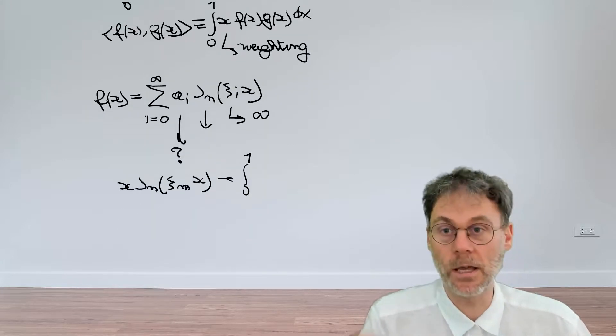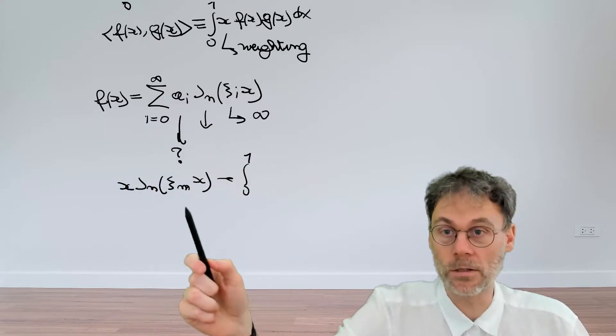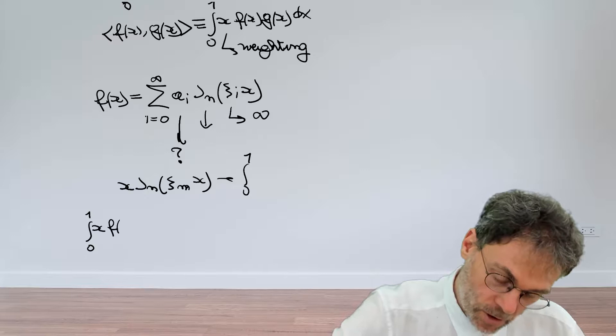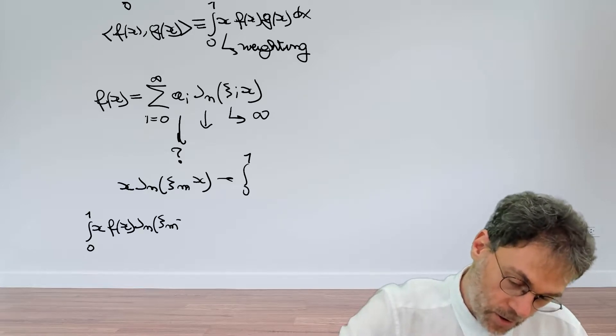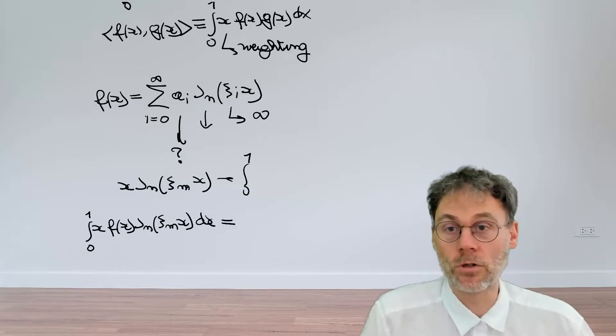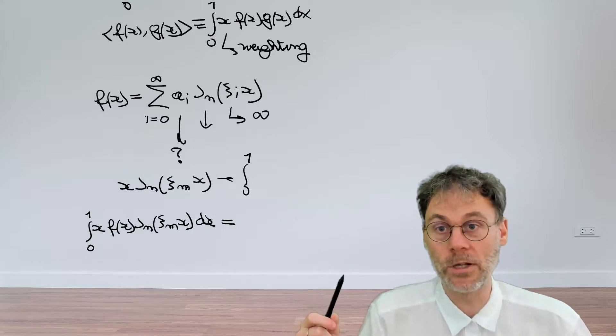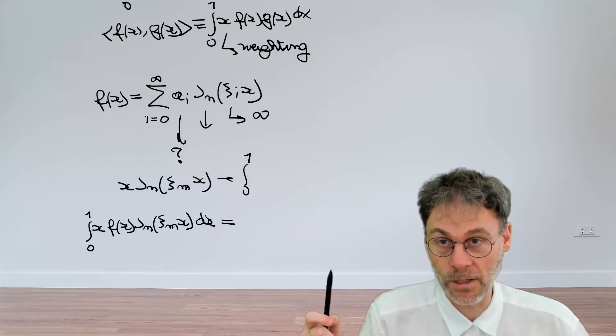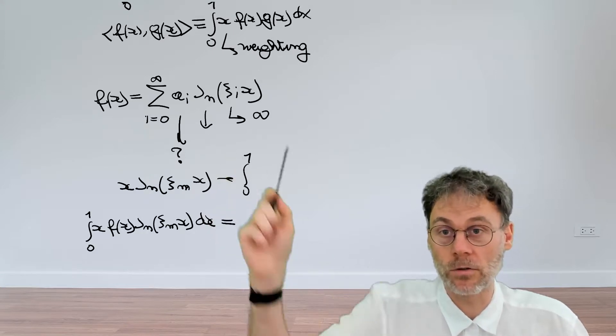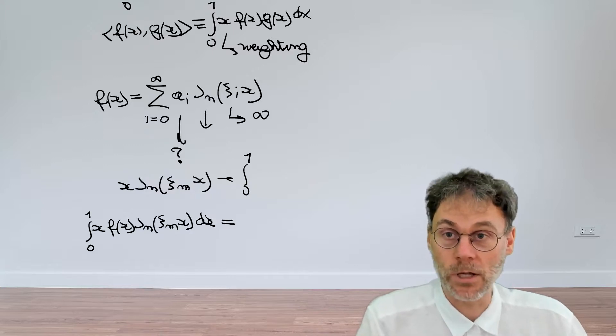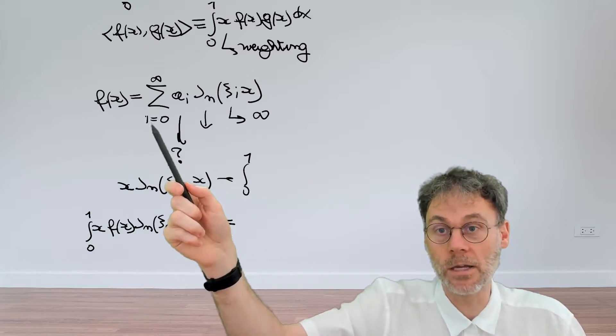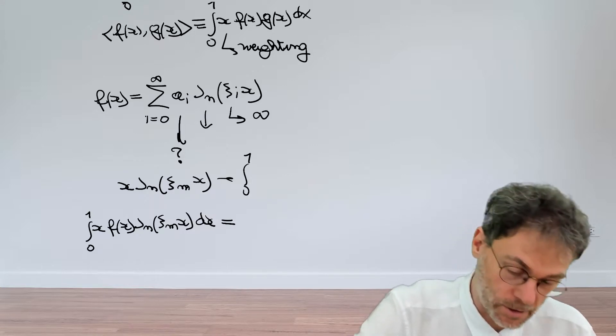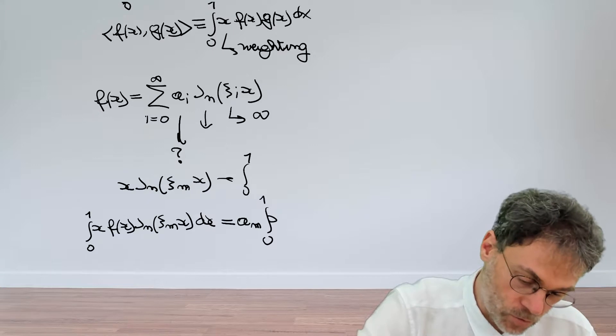So what we're doing here is we're basically taking the scalar products of this equation here with the function J_n(ξ_m x), and that becomes the integral from 0 to 1 of our weighting function, our first function, and our second function. But also on the right hand side, we're basically looking at scalar products between two functions. In this case, the scalar product between J_n(ξ_i x) and J_n(ξ_m x). And yeah, there's orthogonality going on, right? So these will be orthogonal. The only exception is when the summation index i here will be equal to m, because then you will have the scalar product of the function with itself.